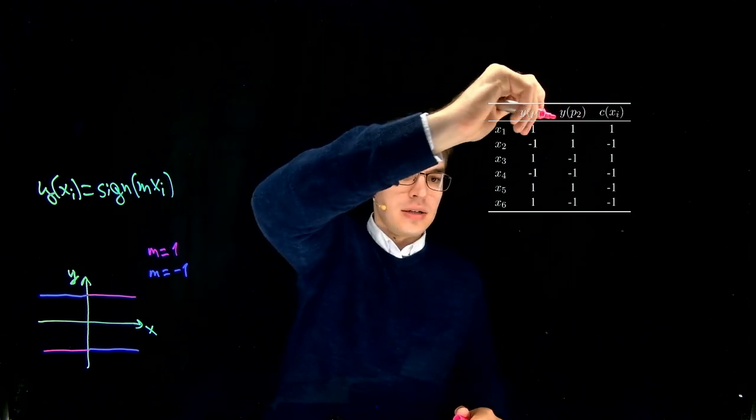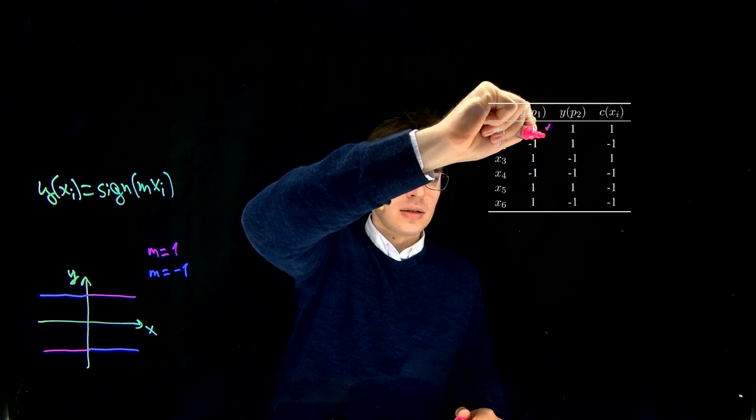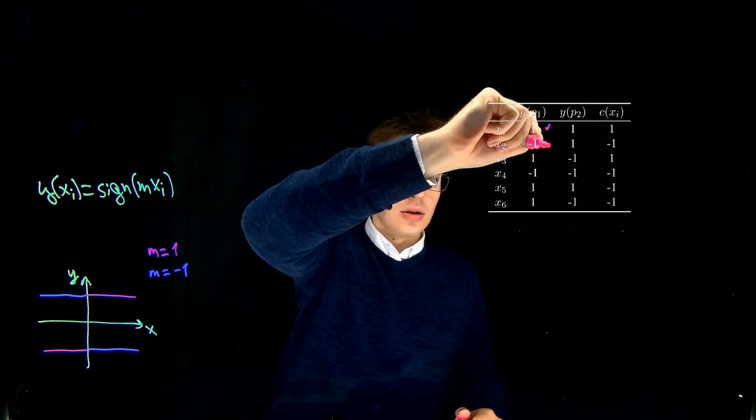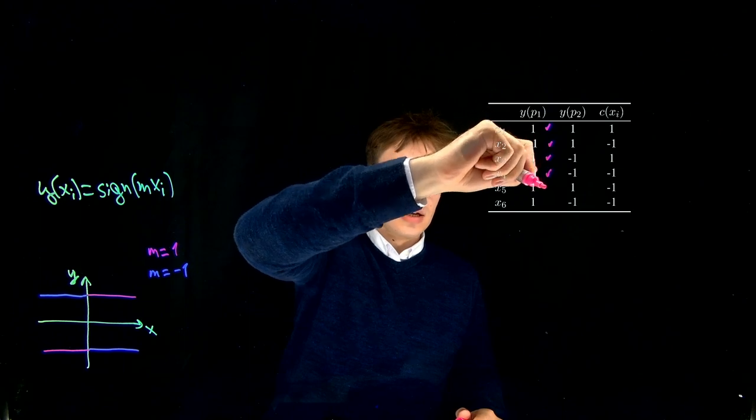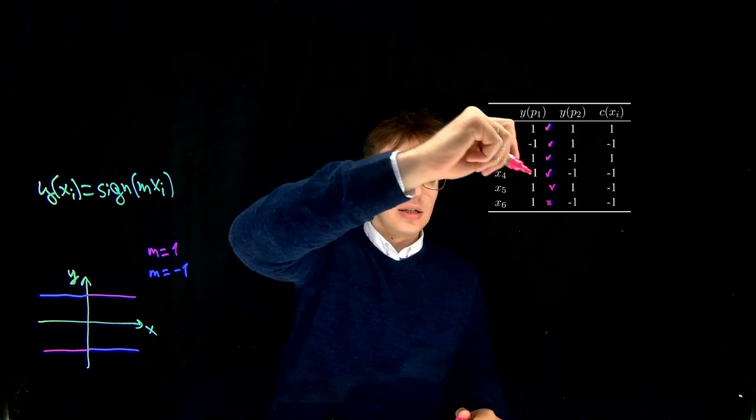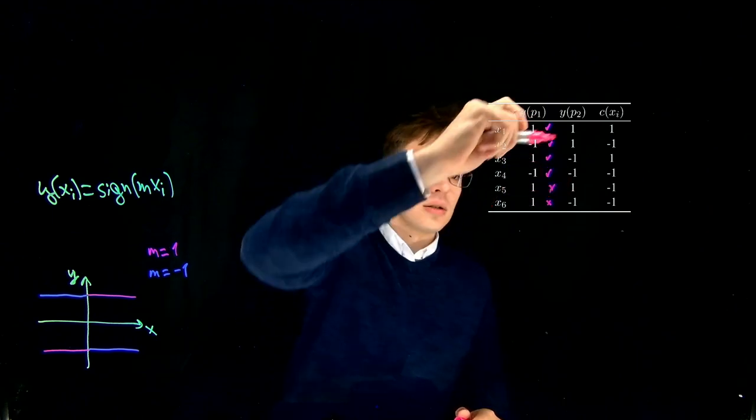And we can see that this one is correct, the next one is also correct, this one is also correct, this one is correct, this one is not, and this one is not either. Can't really read that. Let's do it that way.